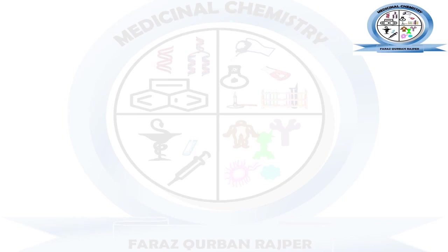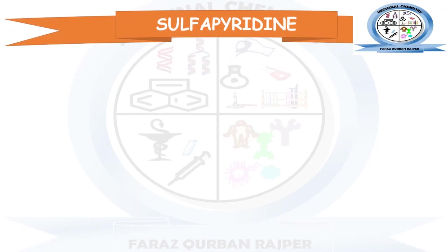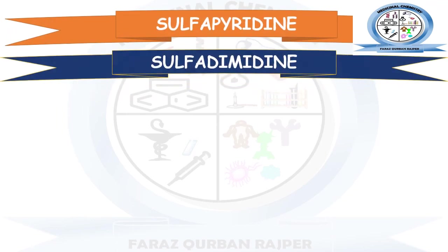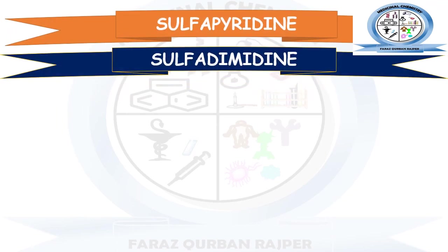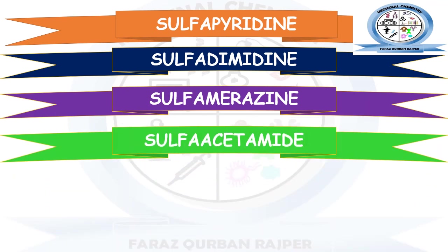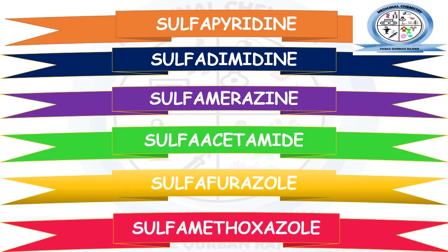Examples of drugs formed by N1 substitution include sulfapyridine, sulfadimidine, sulfadiazine, sulfacetamide, sulfafurazole, and sulfamethoxazole. All of these are examples of N1-substituted drugs of the sulfonamide class.